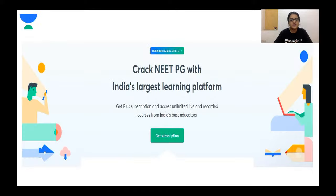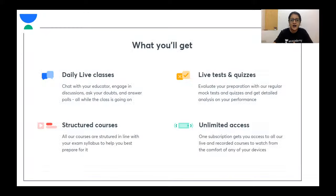Unacademy is India's largest learning platform. With a plus subscription you get access to unlimited live and recorded courses from India's best educators. You get daily live classes where you can interact with your faculty, ask questions, and get your queries solved. There are structured courses designed in line with your exam syllabus to help you prepare for postgraduate entrance exams like AIIMS, NEET, and JIPMER. There are live tests and quizzes after completing a topic, and unlimited access with one subscription.